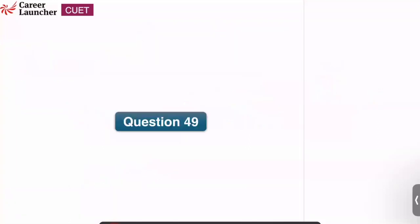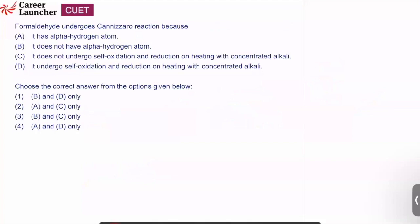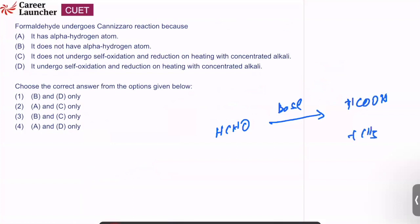Question number 49: formaldehyde undergoes Cannizzaro reaction. Cannizzaro reaction involves self-oxidation and reduction in presence of concentrated alkali — HCHO gives HCOOH and CH3OH. This happens when there is no alpha hydrogen. Formaldehyde does not have alpha hydrogen — correct. The statement that it does not undergo self-oxidation and reduction with concentrated alkali is wrong. B and D are correct answers; answer is option 3.